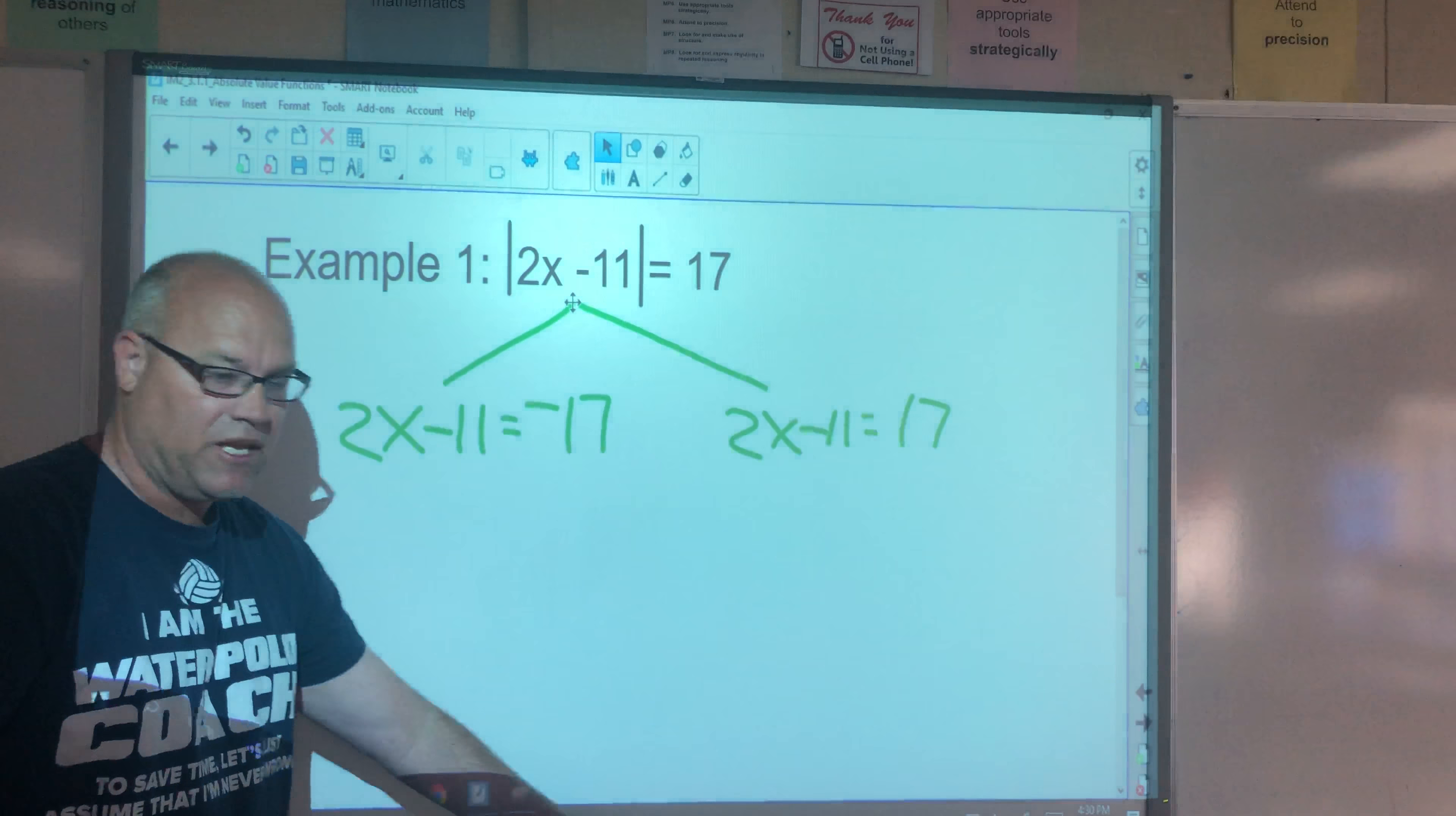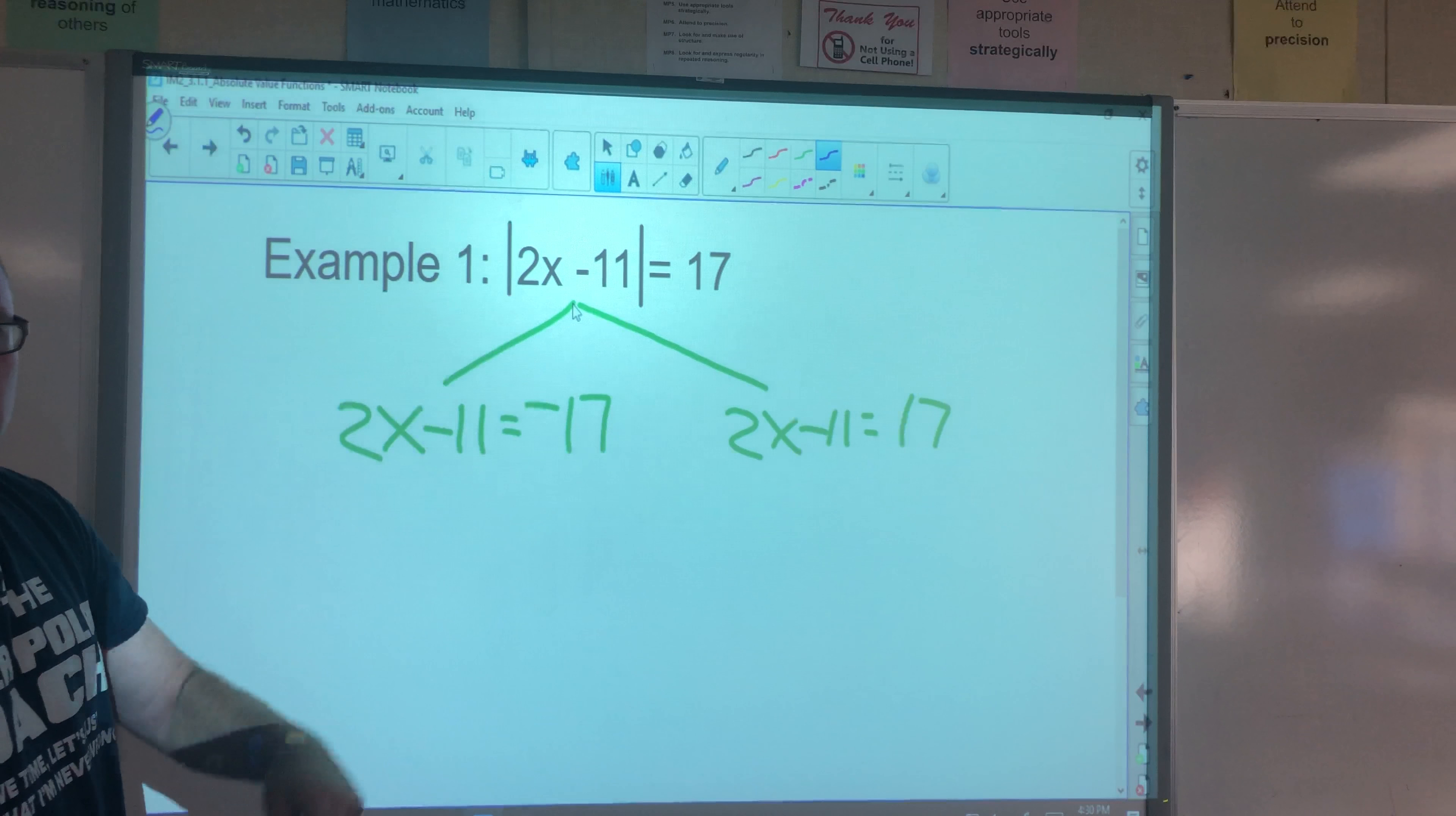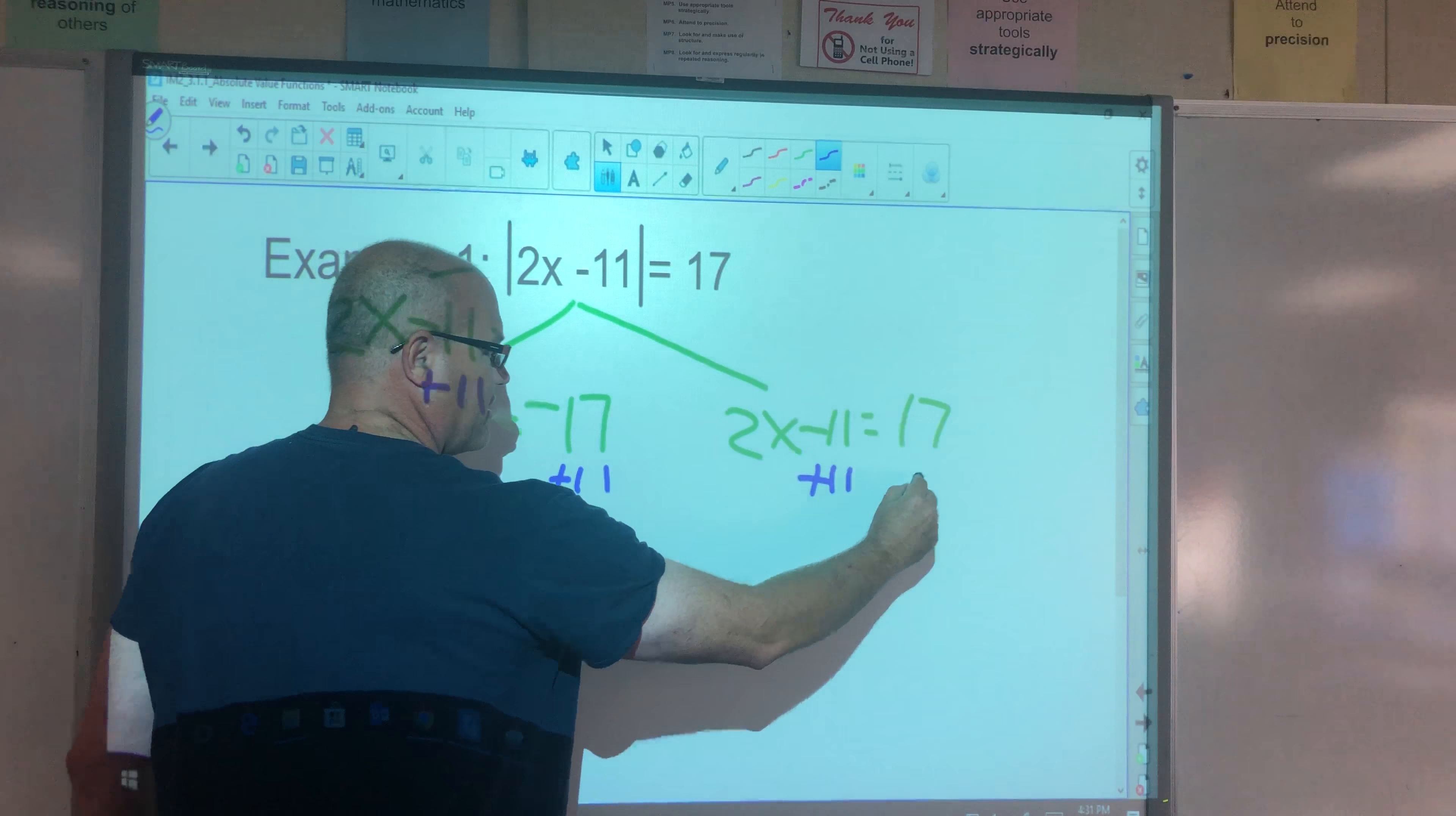So that's the first thing you need to do once you have an absolute value equation with the bars on the left side, the quantity on the number on the right side. So now we just solve the two equations like we've been doing for years. So we're going to use the addition property of equality, add 11, add 11 to both sides, do both equations at the same time.